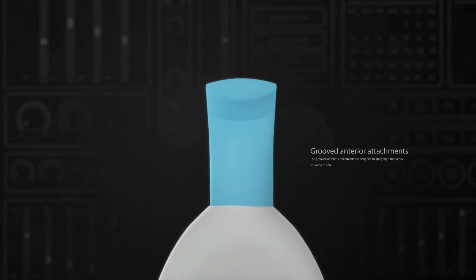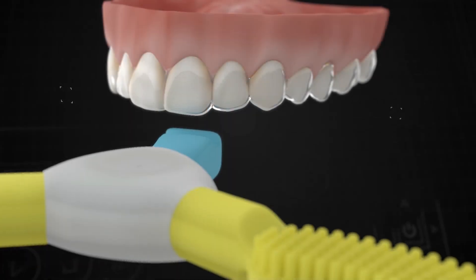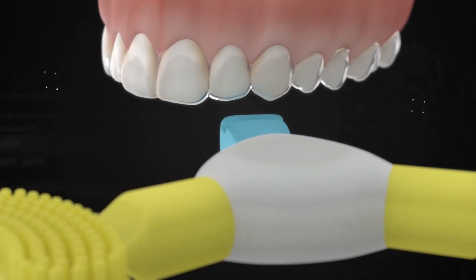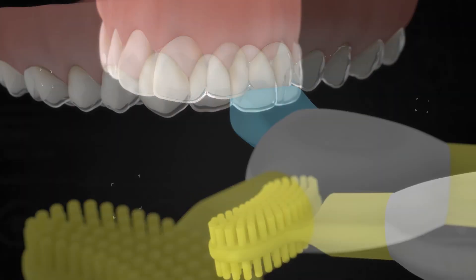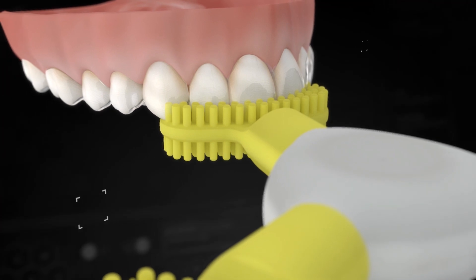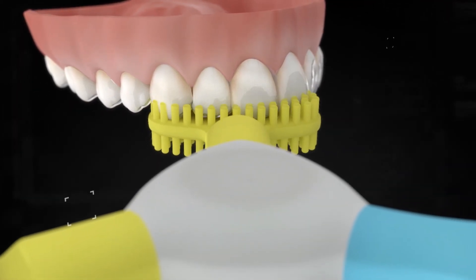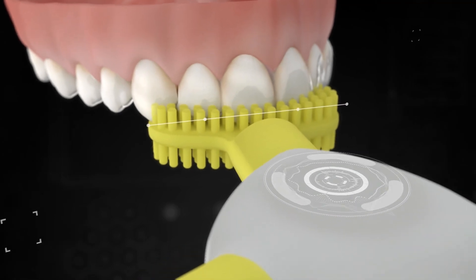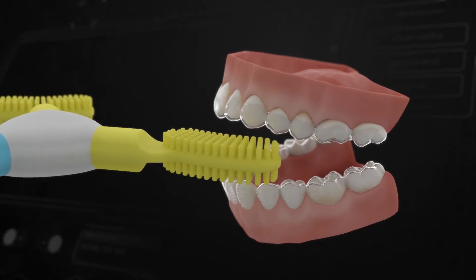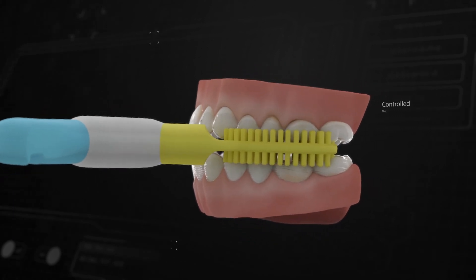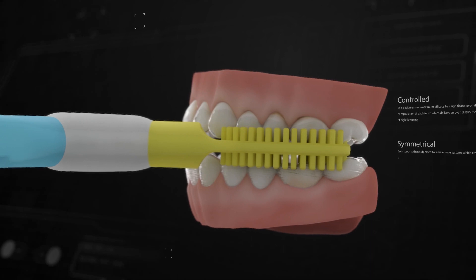The grooved anterior attachments are designed to apply high-frequency vibration to anterior teeth which may be lagging during treatment. This design ensures maximum efficacy by significant coronal encapsulation of each tooth which delivers an even distribution of high-frequency acceleration forces. Each tooth is then subjected to similar force systems which creates controlled and symmetrical acceleration.